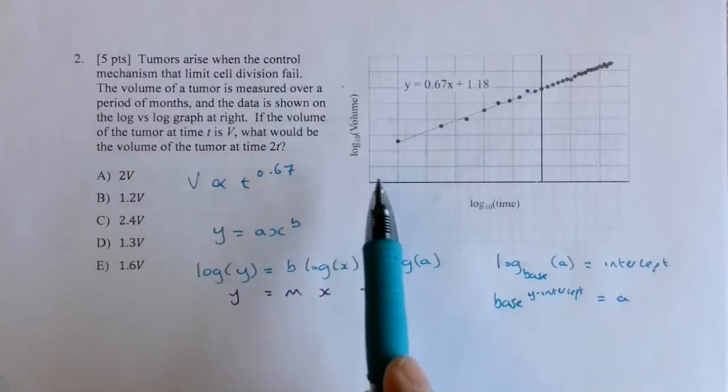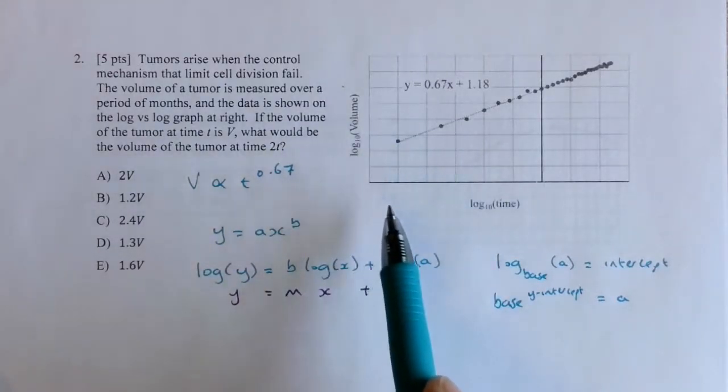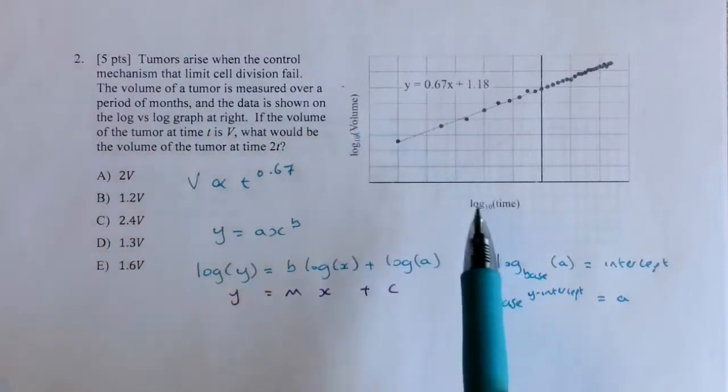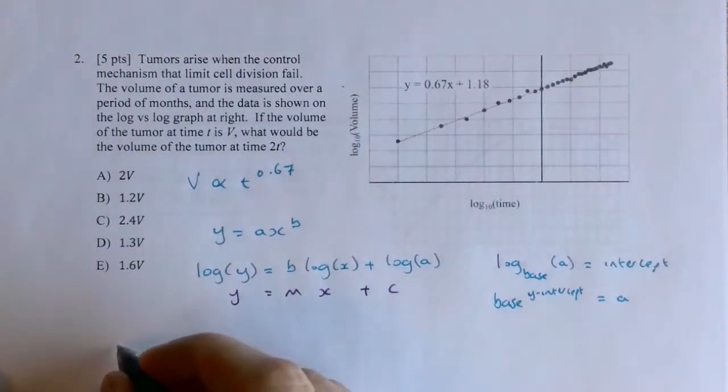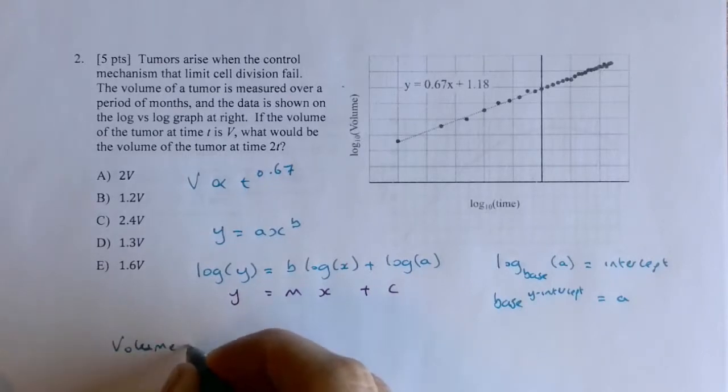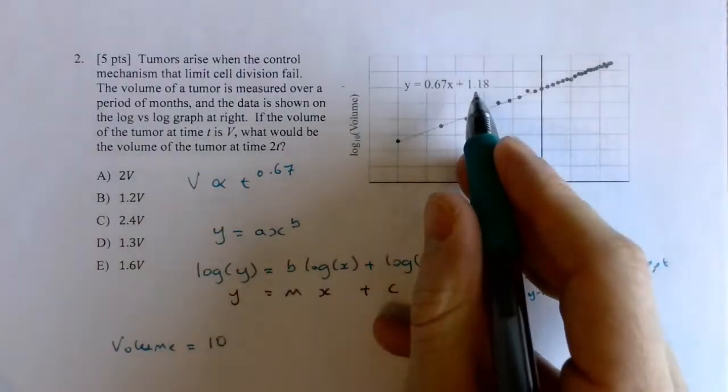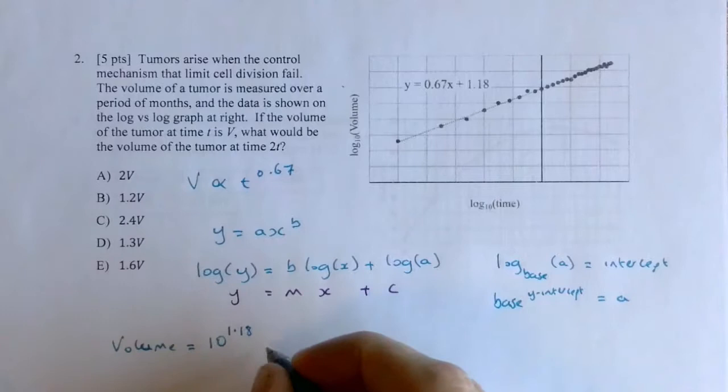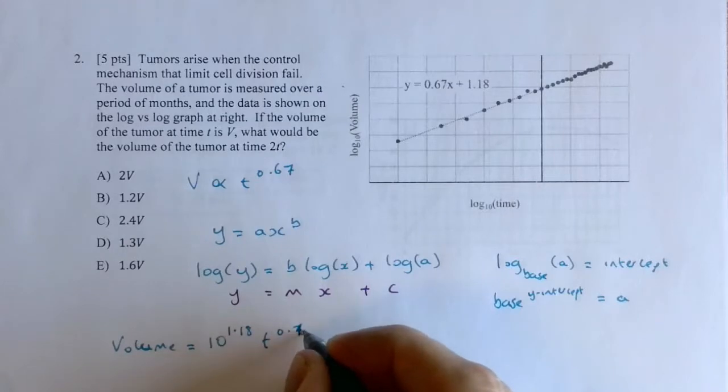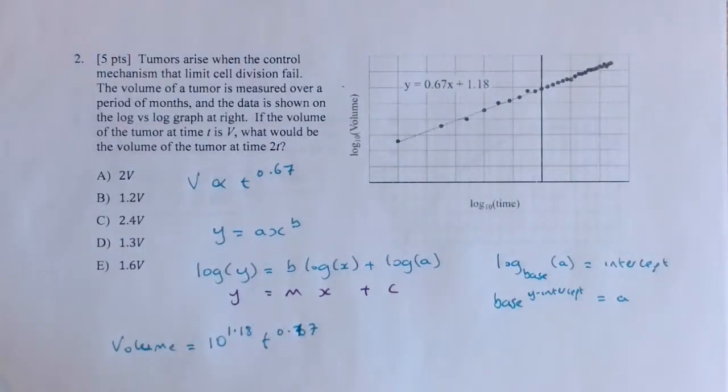So we can write, taking the log-log information, we can write the power function for volume and time as volume will be equal to the base of the logarithm, which is 10, raised to the power of the y-intercept, times the x-value to the 0.67. So what we can state here is that the volume is equal to 10 raised to 1.18, which is about 15, so 15t to the 0.67.